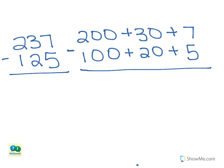Now we are going to subtract. Starting in the ones place, 7 minus 5 equals 2. 30 minus 20 equals 10. And 200 minus 100 equals 100.